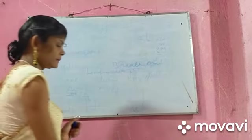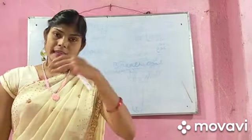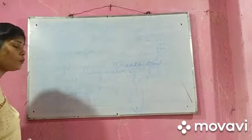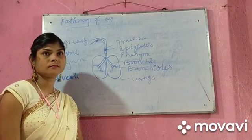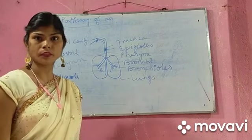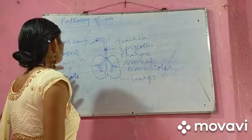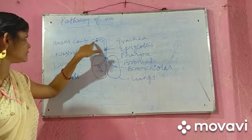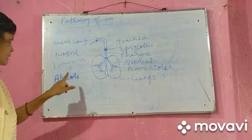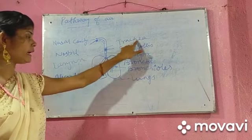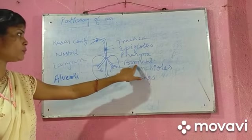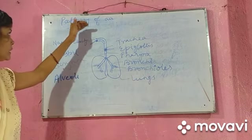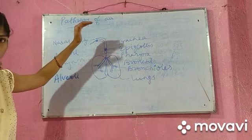This experiment shows that we take in oxygen and release out carbon dioxide. Now we will discuss the pathway of air. The organs involved in the pathway of air are: nasal cavity, nostrils, larynx, alveoli, trachea, epiglottis, pharynx, bronchi, and lungs.